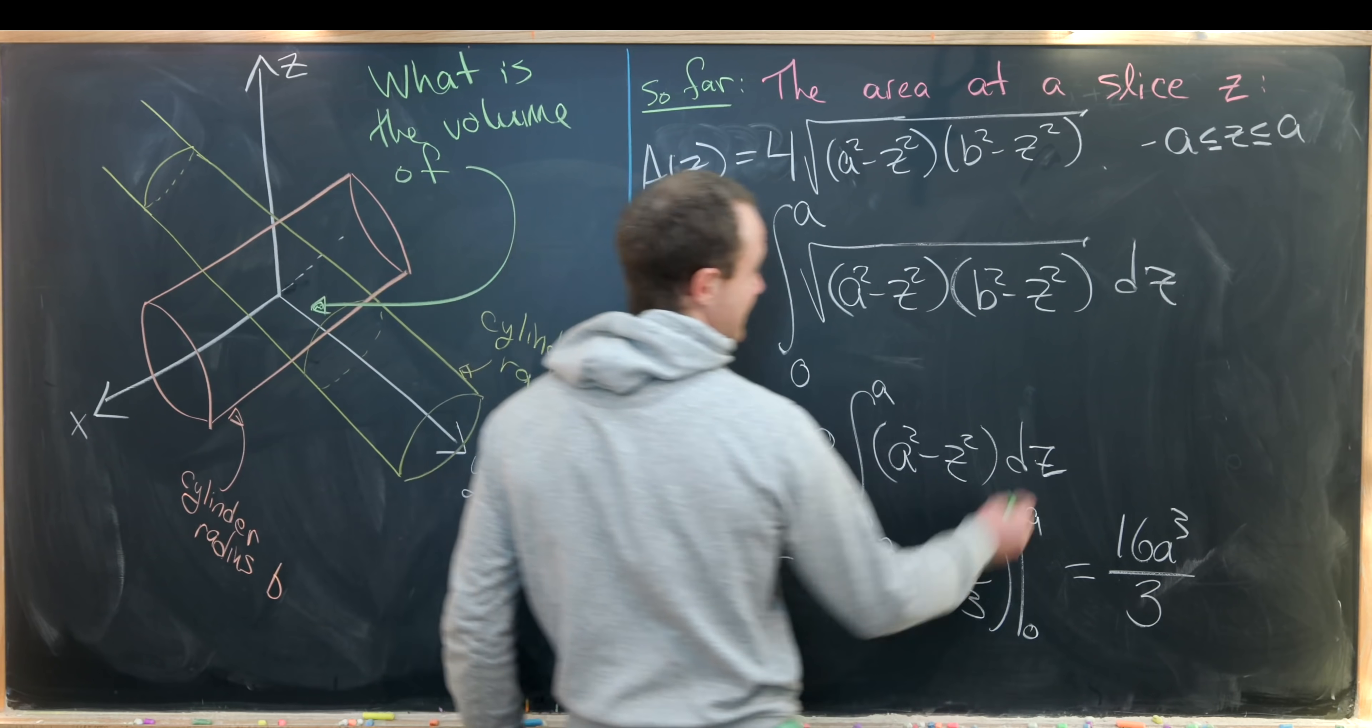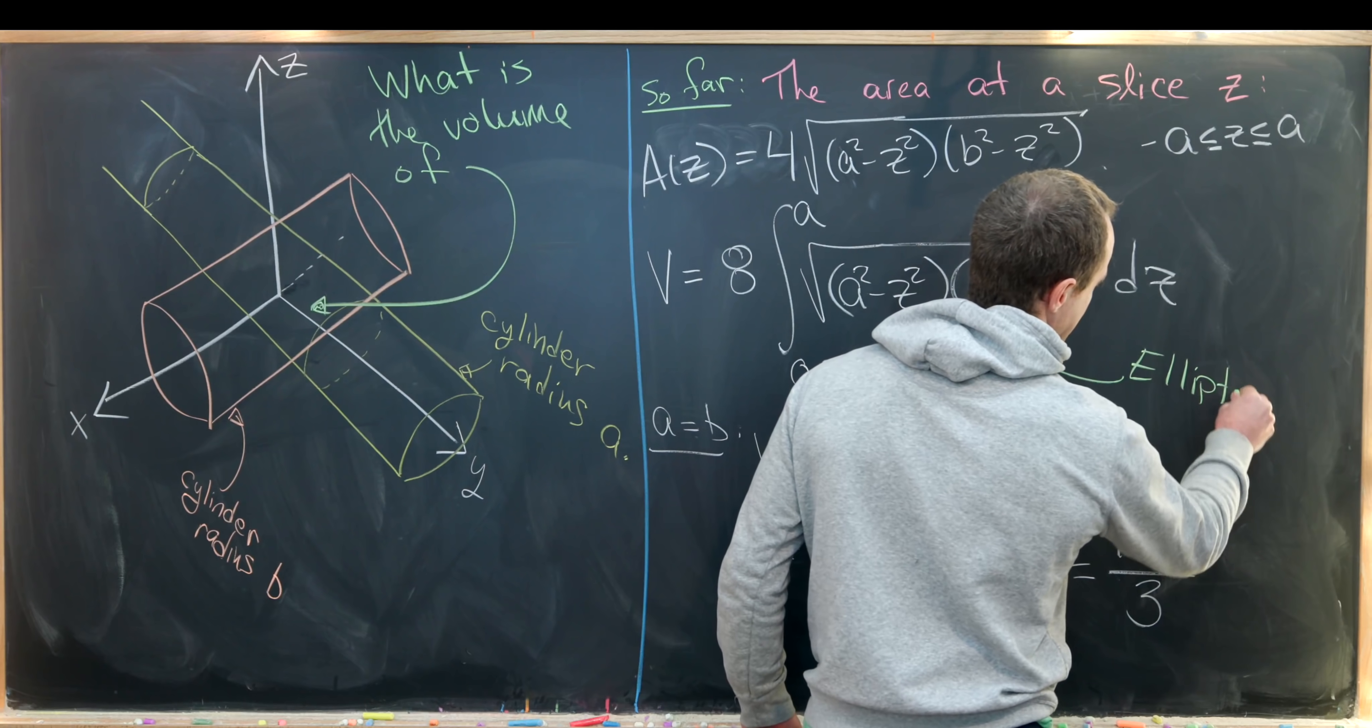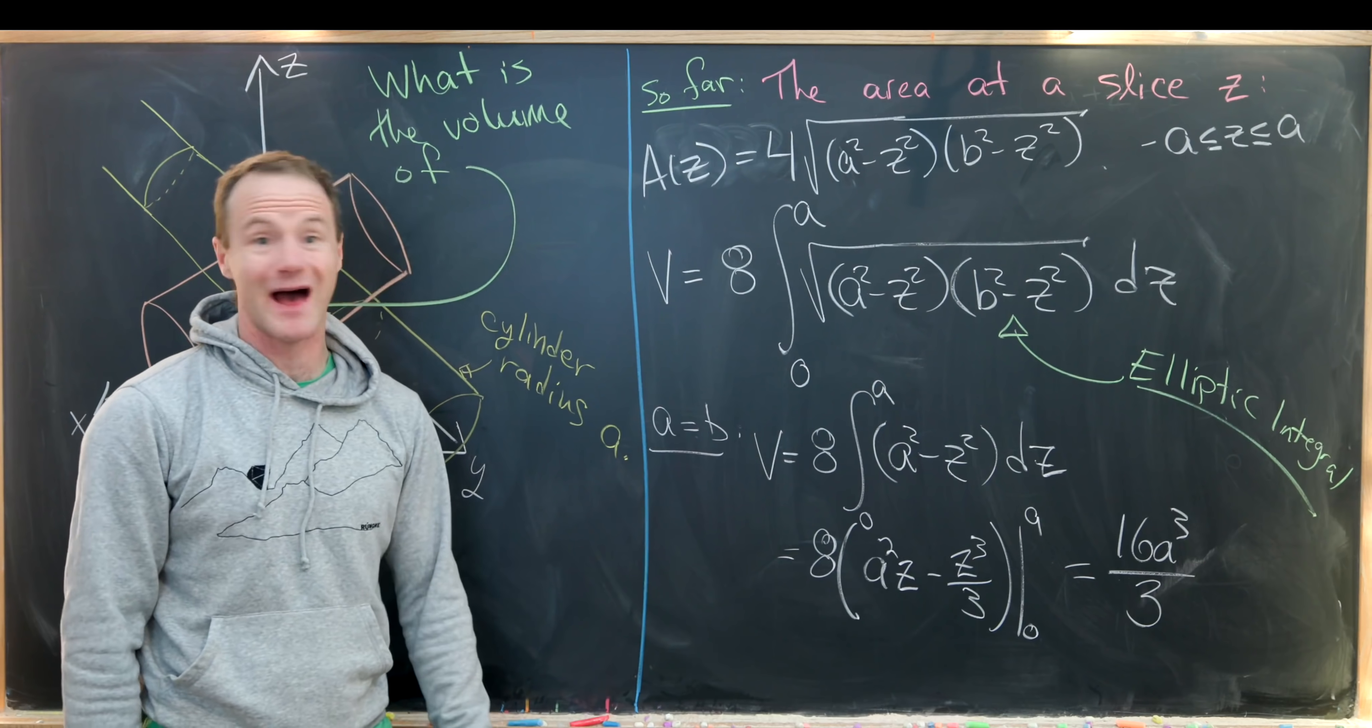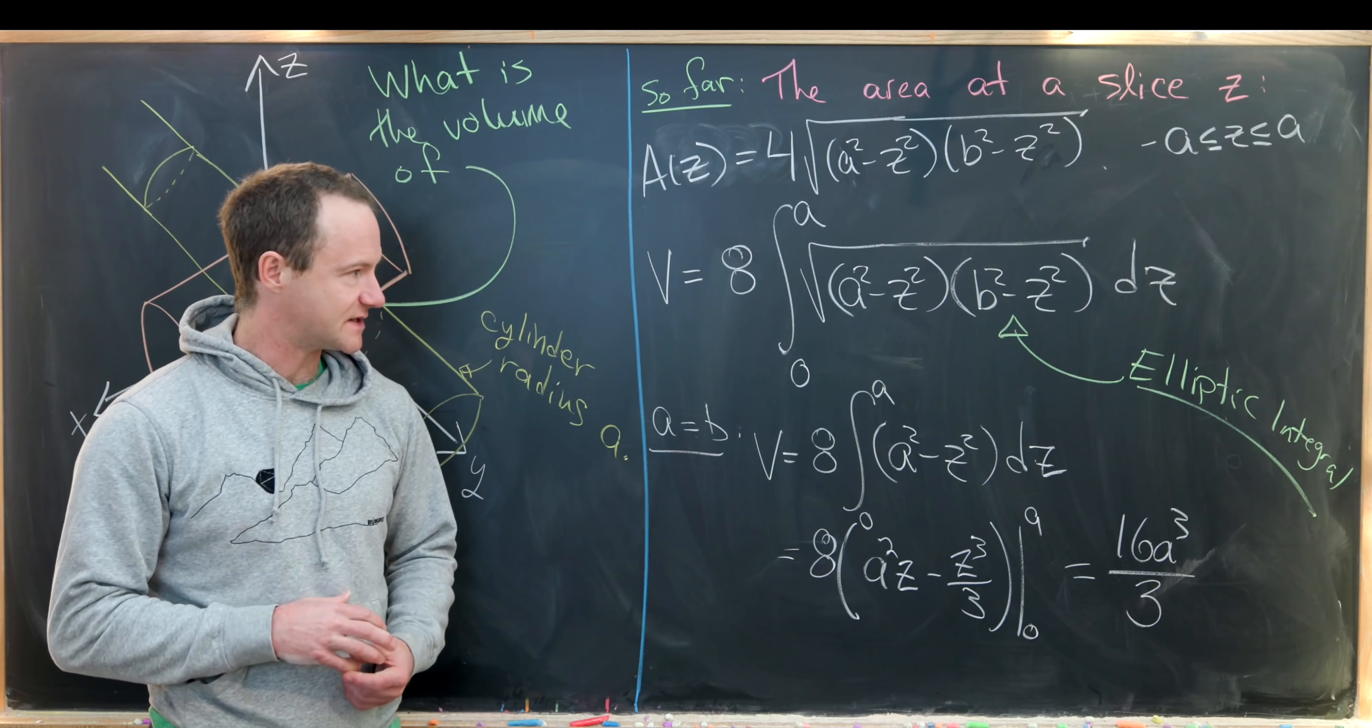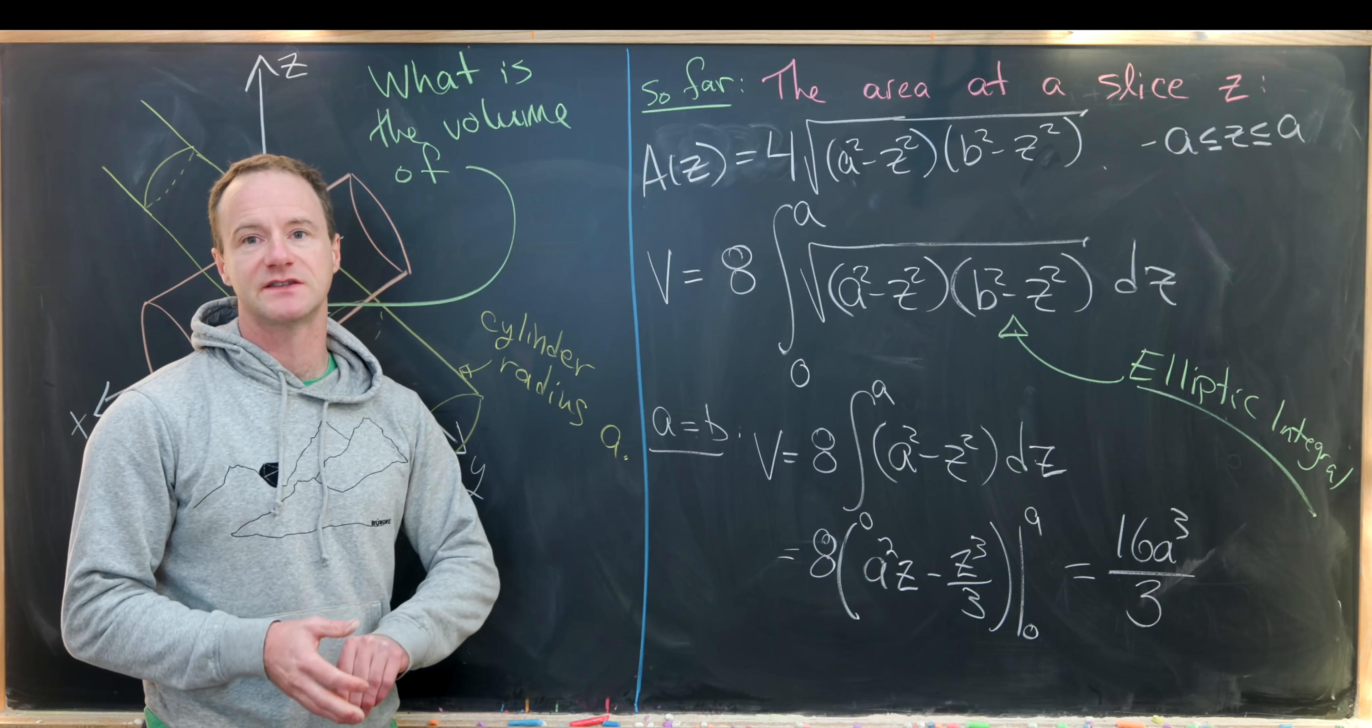And like I said, if a is not equal to b, this is something called an elliptic integral. And interestingly, elliptic integrals have a lot of applications in modern Ramanujan-style number theory. So like I said, I'm thinking about doing a mini-series on these types of integrals. Let me know if you'd like to see that. And that's a good place to stop.